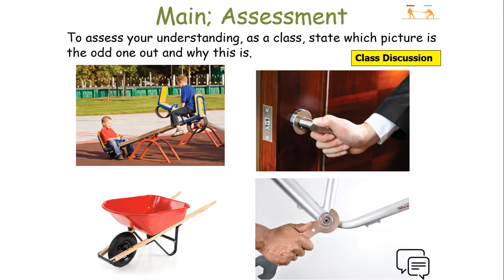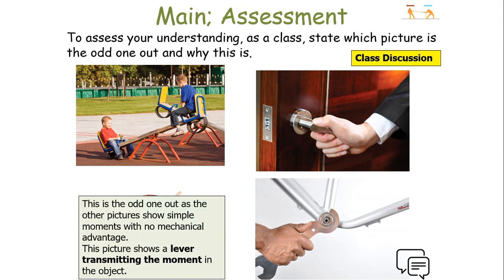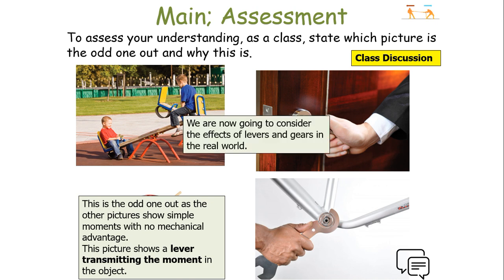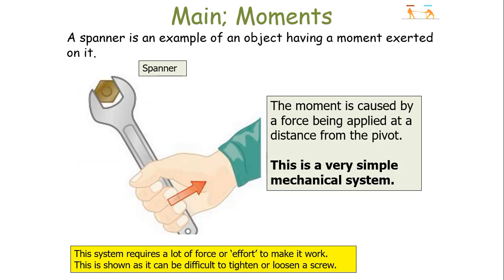To look at this particular topic, let's consider four different examples: a seesaw, someone opening a door, a wheelbarrow, and someone screwing in a nut with a spanner — which one is the odd one out? The odd one out is the wheelbarrow, because this one shows simple moments with no mechanical advantage. The other three show a lever transmitting the moment in the object.